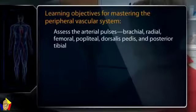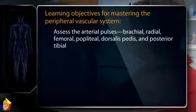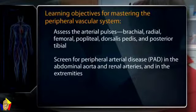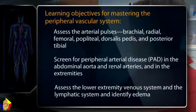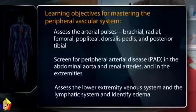Your learning objectives for mastering the examination of the peripheral vascular system are to assess the arterial pulses — brachial, radial, femoral, popliteal, dorsalis pedis, and posterior tibial. To screen for peripheral arterial disease (PAD) in the abdominal aorta, renal arteries, and extremities. To assess the lower extremity venous system and lymphatic system, including the axillary, epitrochlear, and inguinal lymph nodes, and to identify edema.